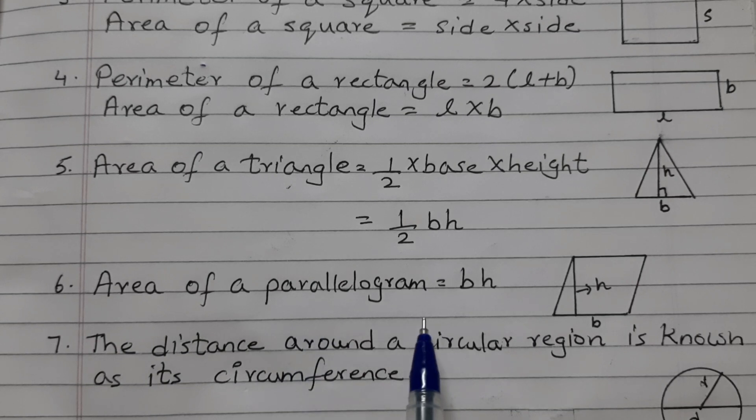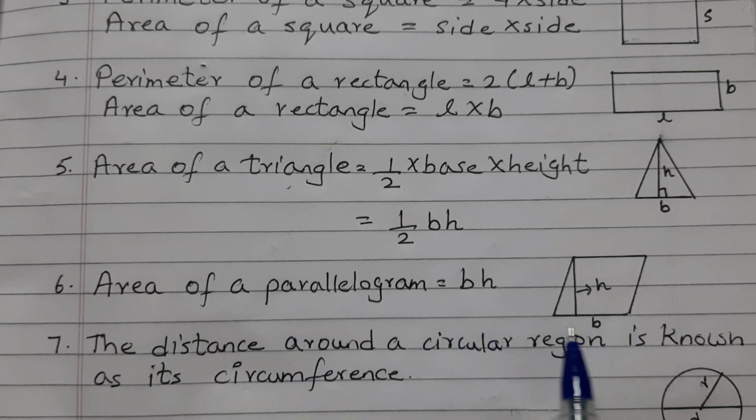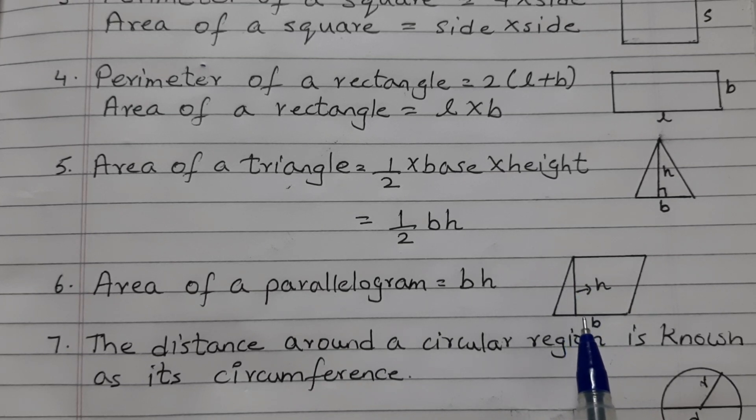Area of a parallelogram is equal to base into height. This is the base B and height is again the perpendicular from the opposite vertex to the corresponding base.